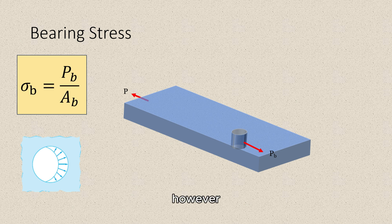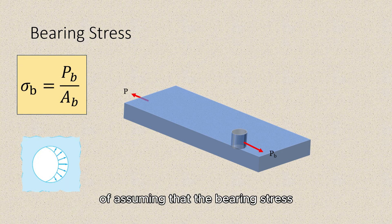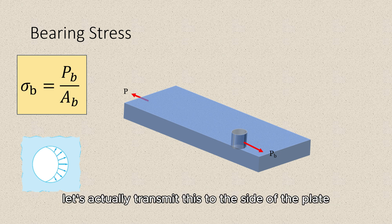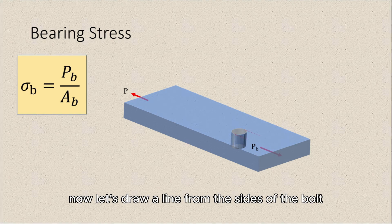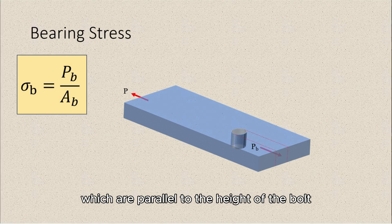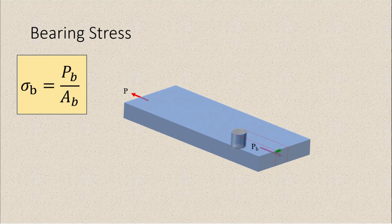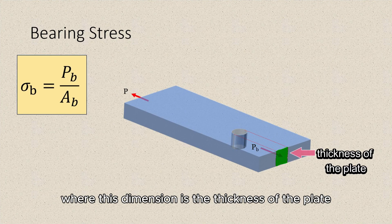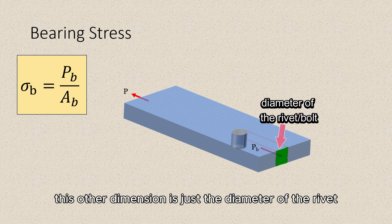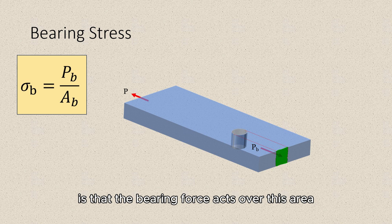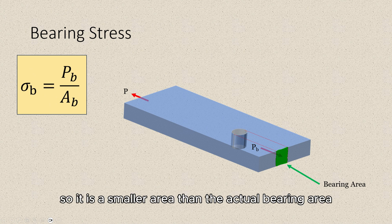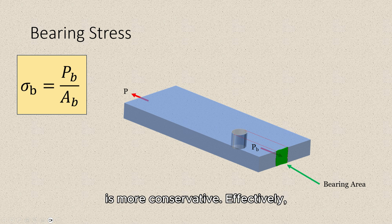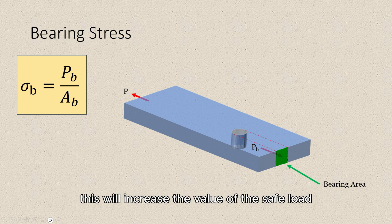However, the difficulty inherent in such a complicated stress distribution is avoided by the common practice of assuming that the bearing stress sigma_b is uniformly distributed over a reduced area. The reduced area we consider is the projected area of the rivet. We draw lines from the sides of the bolt and two vertical lines parallel to the height of the bolt. This green area is the projected area, where one dimension is the thickness of the plate and the other is the diameter of the rivet. This is a reduced area — smaller than the actual bearing area — which means using this area in design is more conservative.